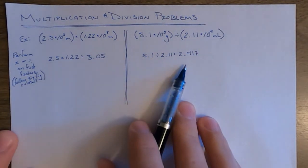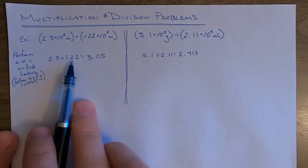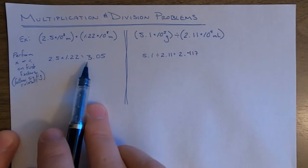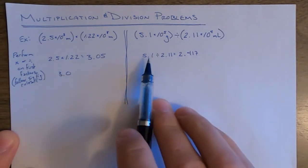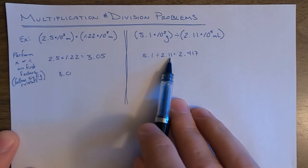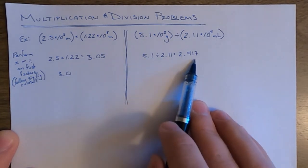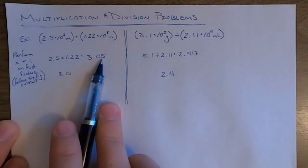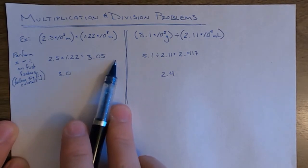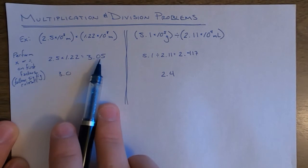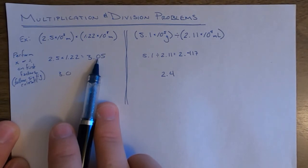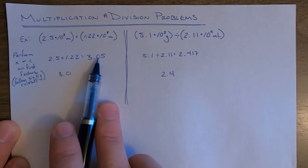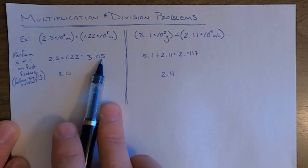These are the two answers that the calculator gives, and these need to be rounded. One value has two sig figs and the other has three, so our answer should only have two sig figs. So this will be rounded to 3.0, and the division answer rounded to 2.4. Note that when rounding a five followed by nothing or zeros, you round in the direction that makes the kept digit even — so it rounds down to 3.0, not up to 3.1.